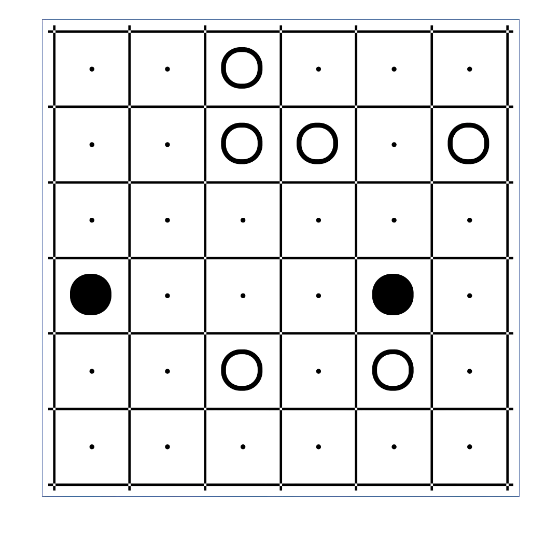Hello. In this video I will explain the rules of Masayu. The puzzle is played on a rectangular grid like this. Some of the cells contain black or white circles.